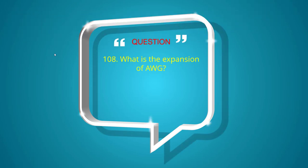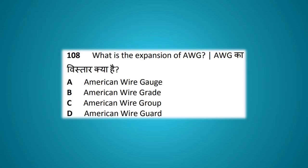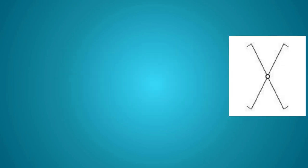What is the expansion of AWG? Options: American wire gauge, American wire grid, American wire group, American wire guard. The answer is American wire gauge.